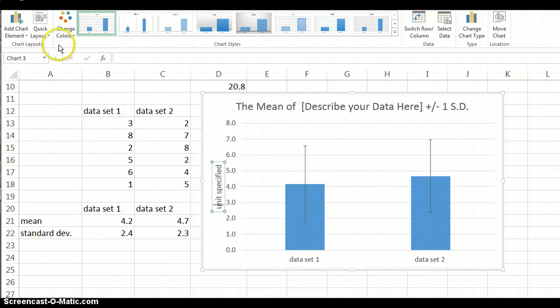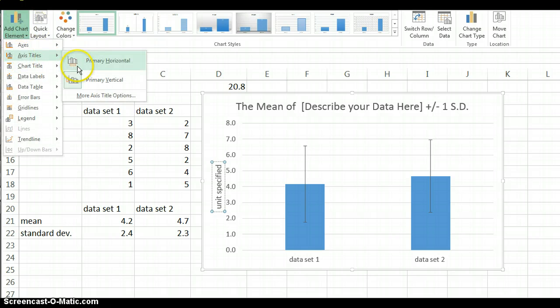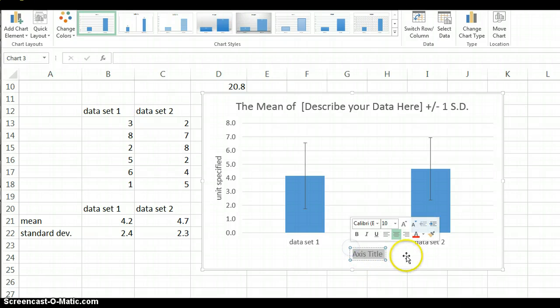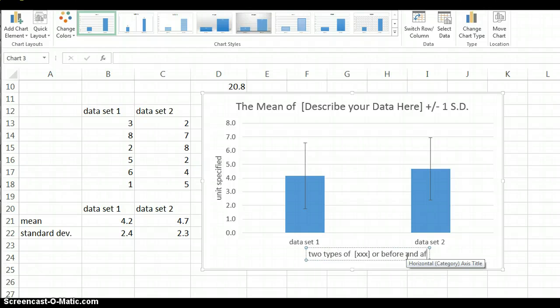Now, same thing with the x-axis. I don't have that label either. So we'll give this a title. This would probably be two types of whatever you would be measuring. Or another example would be before and after. Whatever the event would be. Okay, it's super important that you have these labels because the viewer of your research has no idea what you were doing if you don't distinguish that.